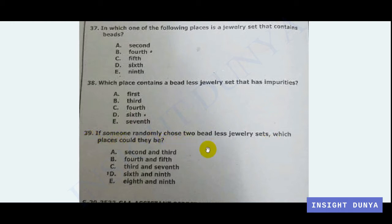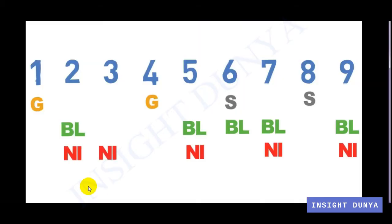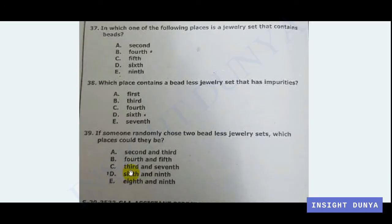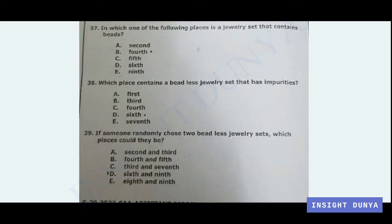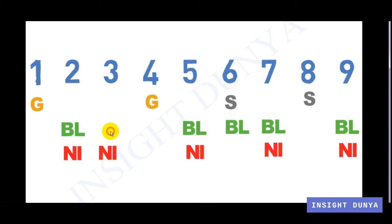Question 39: If someone randomly chose two beadless jewelry sets, which positions could they be? We need to find two positions that are both beadless. Option A: second and third — third has beads, so not the answer. Option B: fourth and fifth — fourth also has beads, so not the answer.